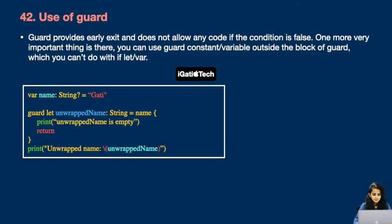Question number 42: use of guard. Guard provides early exit and does not allow any code to run if the condition is false. One very important thing is that you can use a guard constant or variable outside the guard block, which you can't do with if let. In the example, I've declared 'guard let unwrappedName' and I can use that variable outside the guard block.